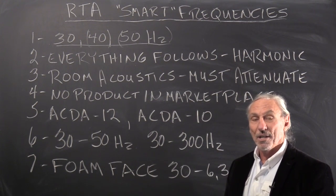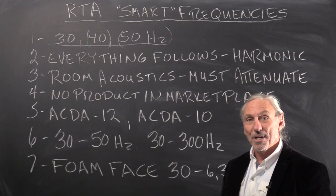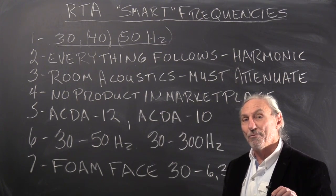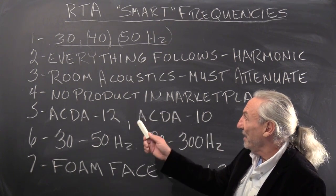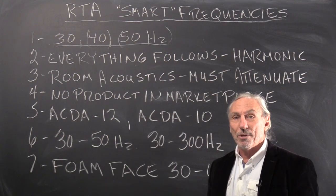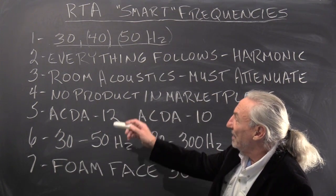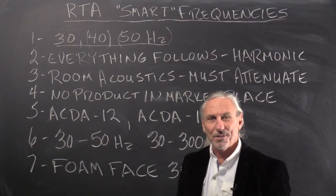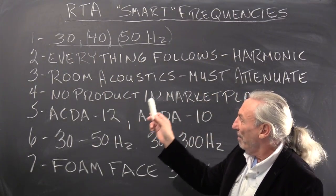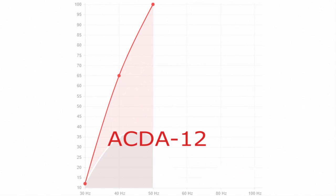35 percent at 30, 63 percent at 40, and 100 percent at 50. When we were doing our testing in all the rooms that we had built, we kept seeing these three frequencies pop up all the time. That's why we designed the ACDA-12 series, because it goes after those three frequencies. You can see the performance graph on our website.